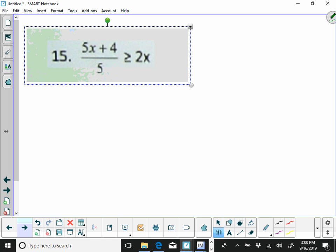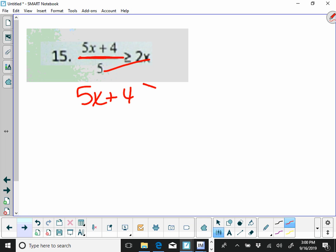So number 15 is the next one I'm going to do. We're going to start, because everything's under this division bar, we're going to start by multiplying. So 5x plus 4 is going to be greater than or equal to 10x. A couple of ways you can do this one. I'm going to show you the way that we're used to doing it, which will be to move the 10x. I'll show you that's the second way. We're going to start by moving the 5x. I know I usually want them on the left, but there's no number over here.